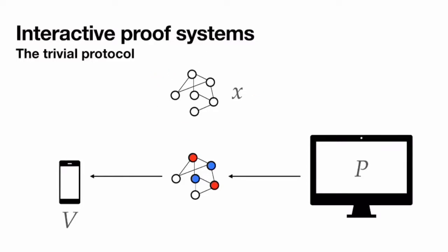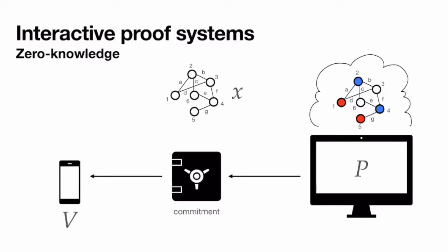That brings us to zero-knowledge, which means that in the protocol the verifier should not learn anything except for the fact that x is three-colorable. I'm going to quickly go through the quintessential protocol for deciding NP problems in a zero-knowledge way: the Goldreich-Micali-Wigderson protocol for three-coloring.